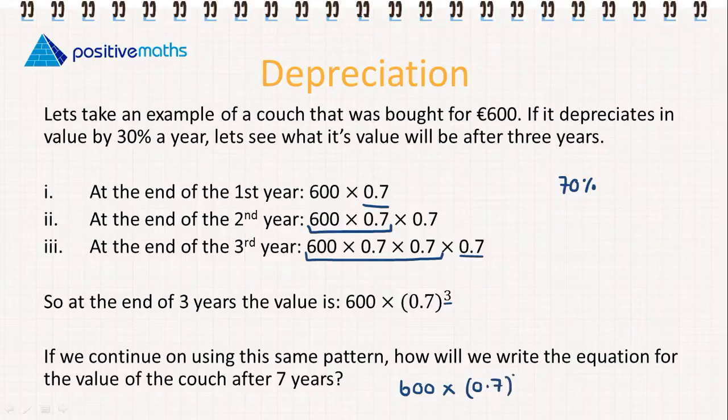One other thing to notice: we're multiplying by 0.7 because we're finding the remaining percentage—we're finding 70% after it decreased by 30%. We must make sure we don't mix it up and find the value that it has decreased. We shouldn't be finding 600 × 0.3; we're finding 600 × 0.7.